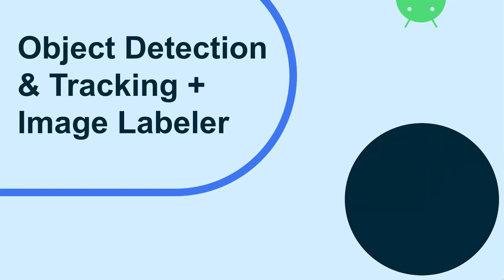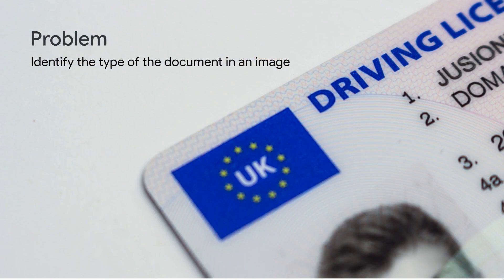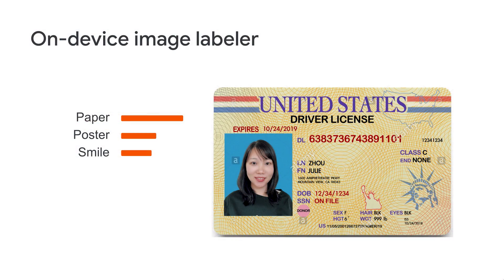I'd like to share an example of how we use ODT to improve user experience together with Image Labeler. Let's say we have a mobile app that requires users to upload a valid form of ID, like a driver's license — something a bank app might require. We often notice that people upload the wrong type of document, and we'd like to catch that earlier in the process. We may start with Image Labeler, which on-device returns about 400 generic labels for categorizing images.